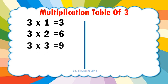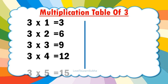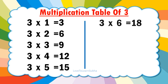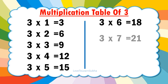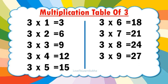3 5s are 15, 3 6s are 18, 3 7s are 21, 3 8s are 24.